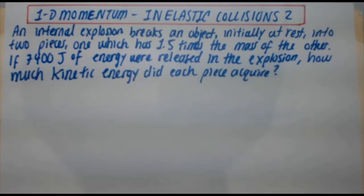Hey guys, welcome back to another inelastic collisions problem. An internal explosion breaks an object initially at rest into two pieces, one which has 1.5 times the mass of the other. If 7,400 joules of energy were released in the explosion, how much kinetic energy did each piece acquire?